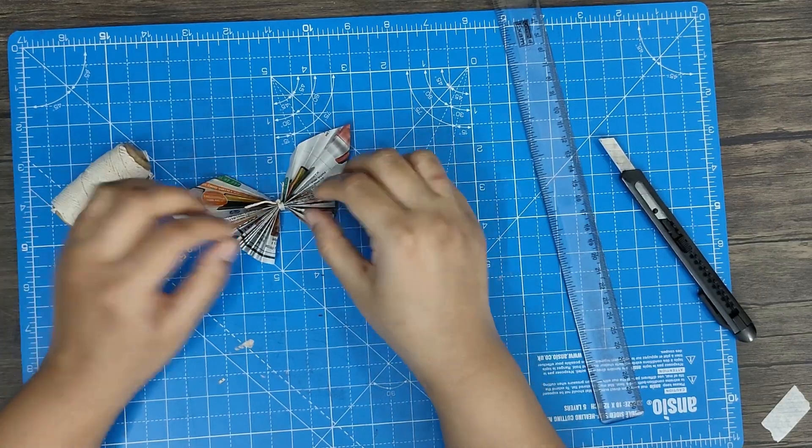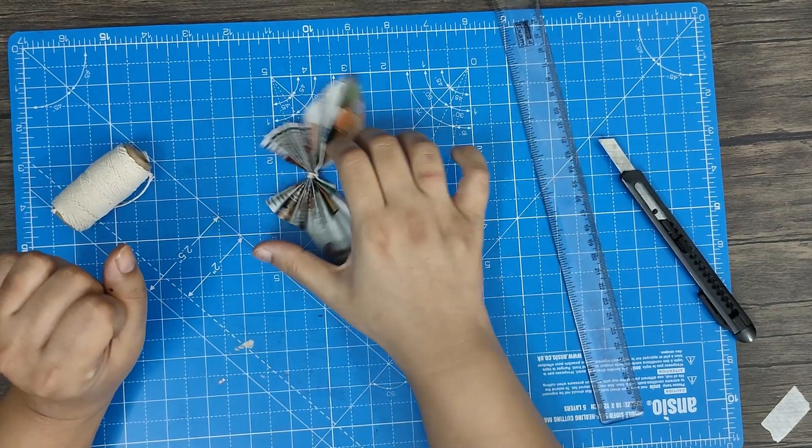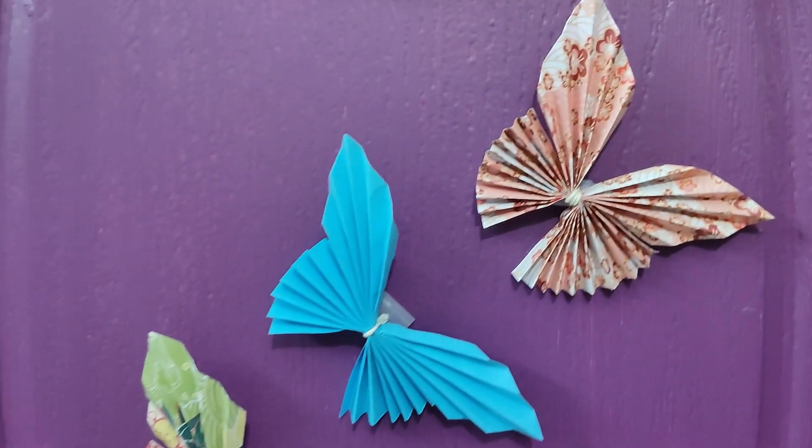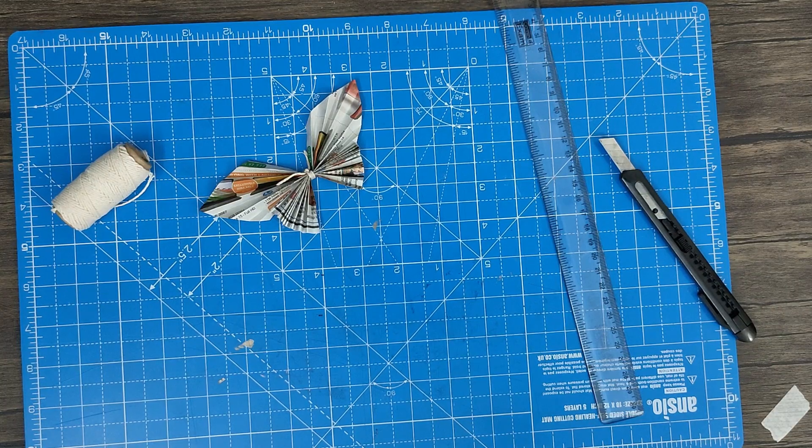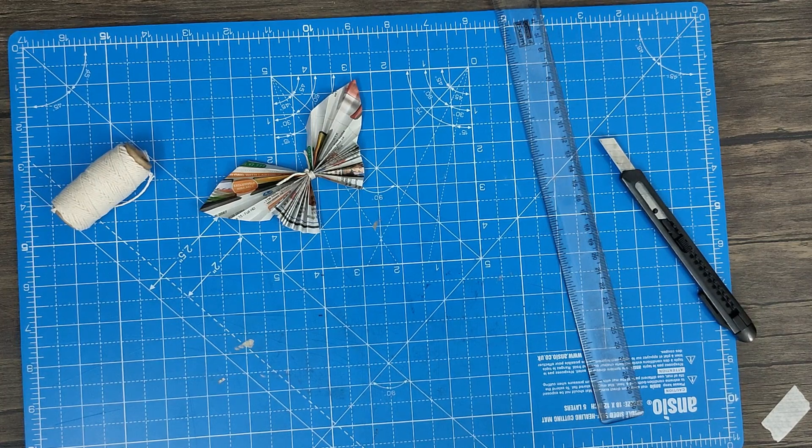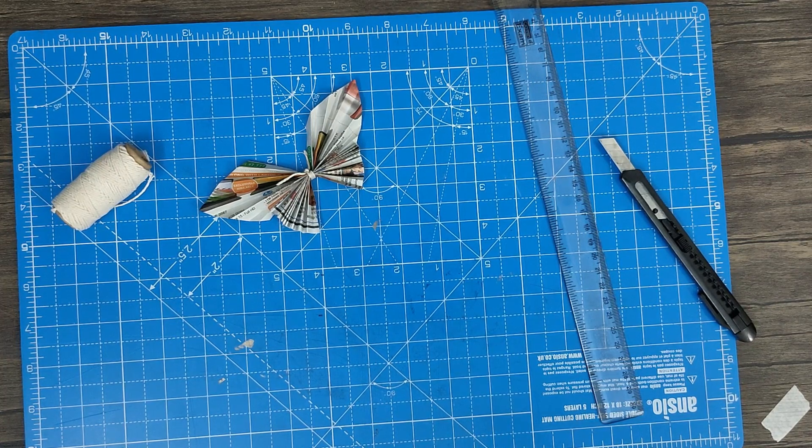It will turn out to be a very beautiful wall hanging. Just like a crane mobile, you can also make a butterfly mobile by adding different colors of butterflies. This was the tutorial for today. I hope you enjoyed the video. Do let me know if you have any questions in the comment section below. See you, bye.